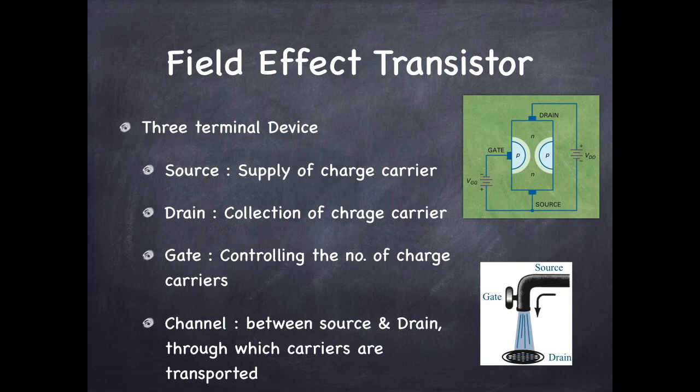The gate here in the tap is controlling the flow of water similar to the gate voltage which controls the flow of electrons from source to drain. So with the help of this analogy, we can understand the working of a field effect transistor.